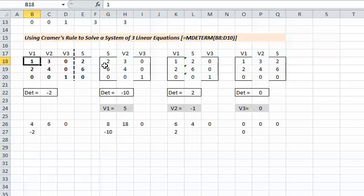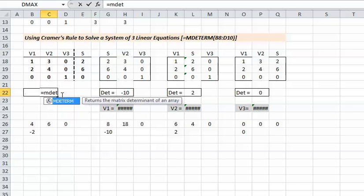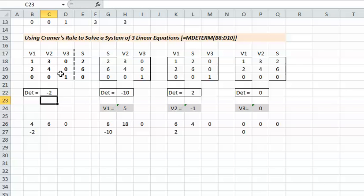What we will do is form three new matrices right here. The first matrix will have the first column replaced with S. The second matrix will have the second column replaced with S, and the third matrix will have the third column replaced with S. Then we have to compute the determinant of the original G matrix, which we have done here. You just type equal M for matrix, then D-E-T, it'll pop up, tab, select the 3x3 array, and that's it.